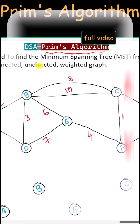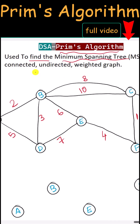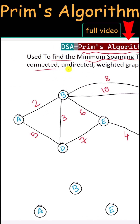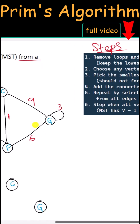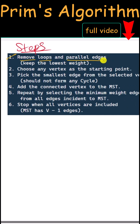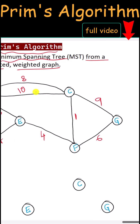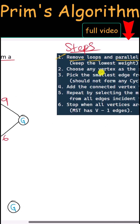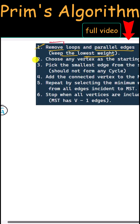Let's talk about Prim's algorithm to find the minimum spanning tree from a connected undirected weighted graph. Here are the steps we're going to follow. First, we remove all the loops and parallel edges from the graph. Here we have a self-loop, so we remove that. We also have a parallel edge, so we keep the edge with the lowest weight and remove the other.